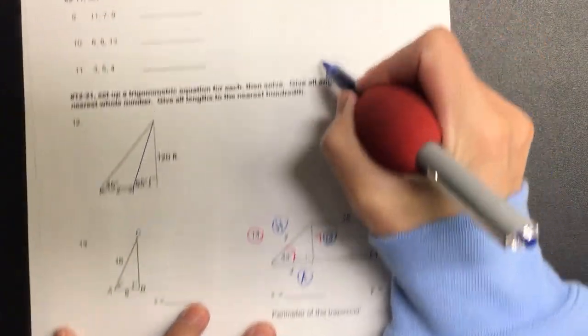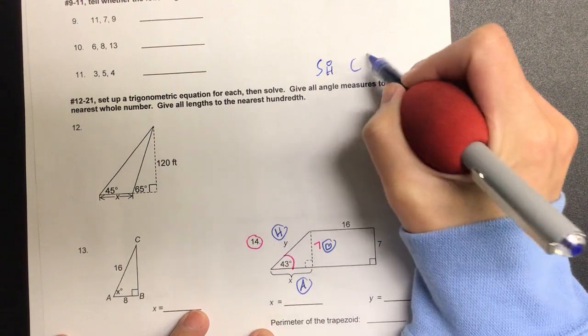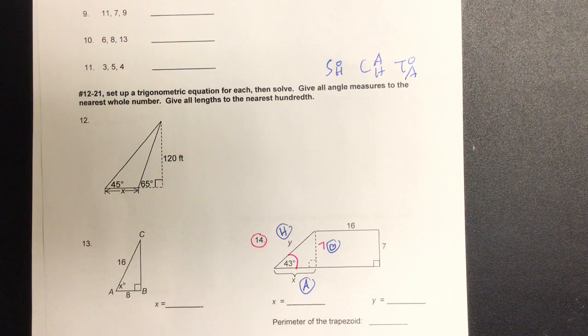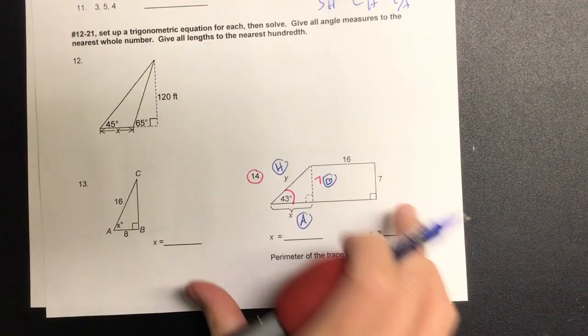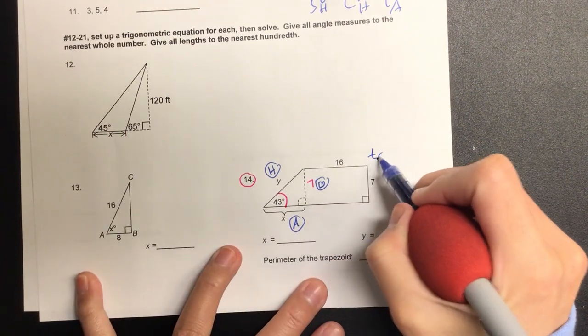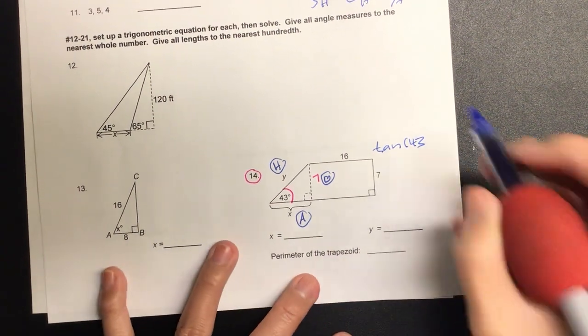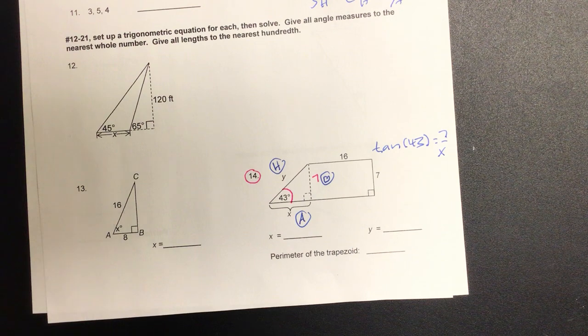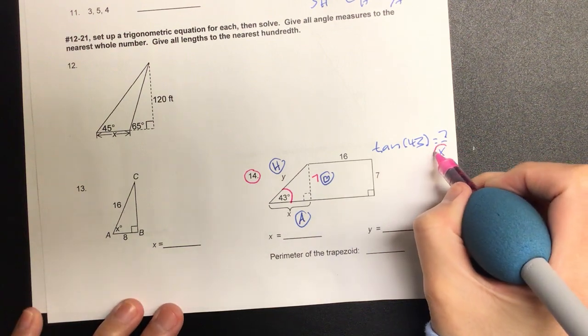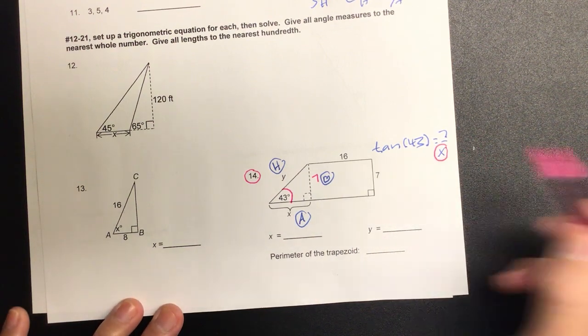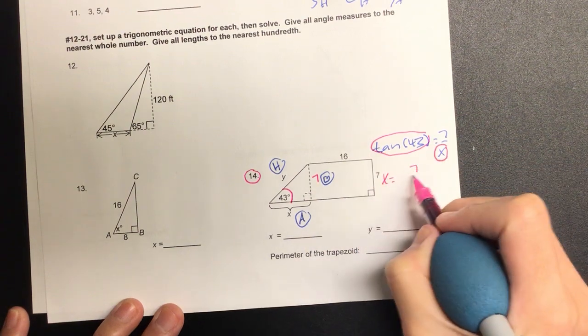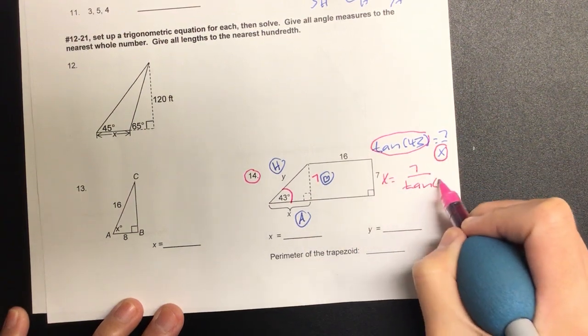Let's write out SOHCAHTOA. Which trig ratio involves O and A? Tangent. So we have tangent of angle forty-three equals my opposite seven over the x. And I gave you all a trick when you have all over x - what can I do with the other side? Swap them. So we have x equals seven over tangent of forty-three.